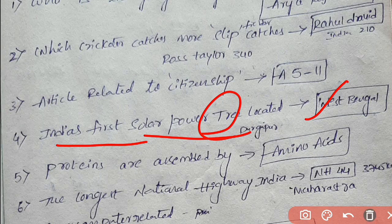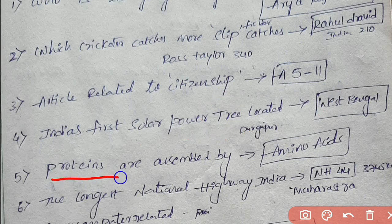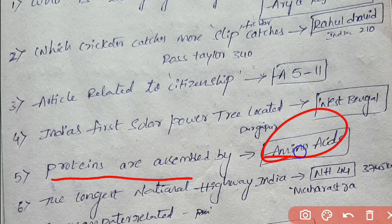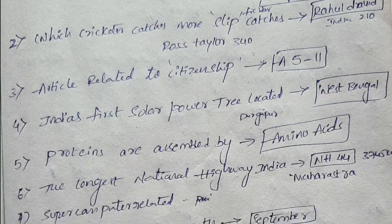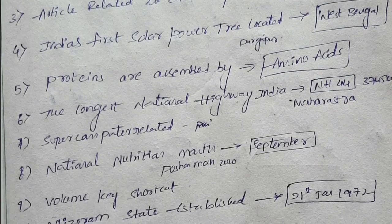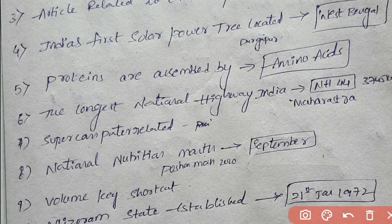Next chemistry question: proteins are assembled by which organelle? Proteins are formed and assembled by ribosomes. Next question: longest national highway. The answer is NH-44.